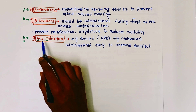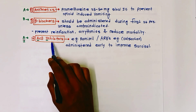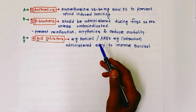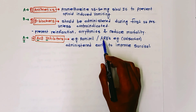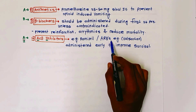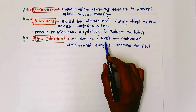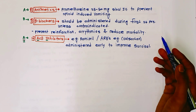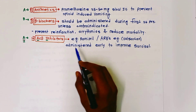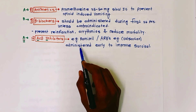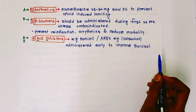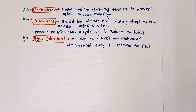AI for ACE inhibitors — examples include ramipril and captopril — or ARBs, angiotensin receptor blockers, such as valsartan and losartan. These are administered early to improve the survival rate in myocardial infarction cases.